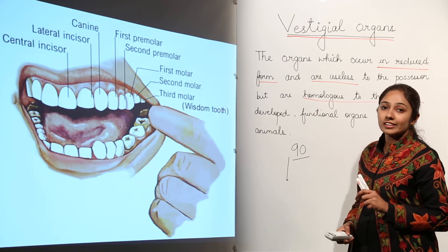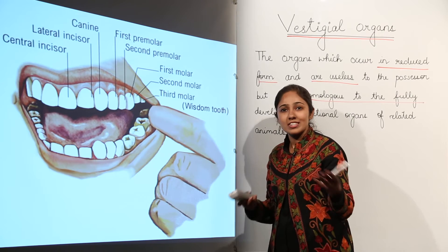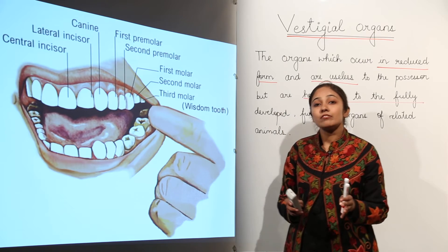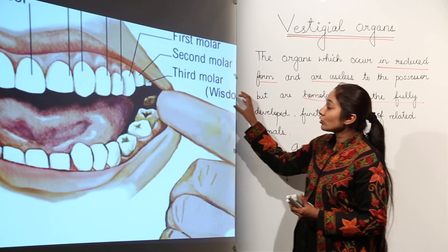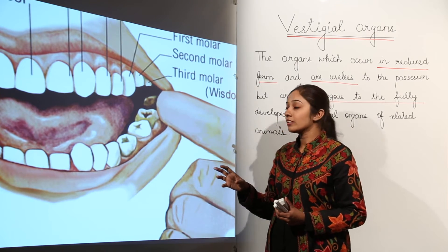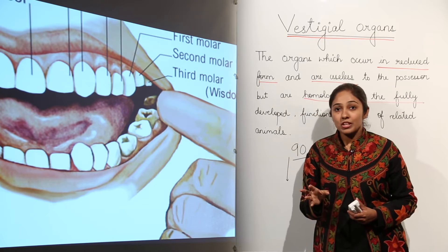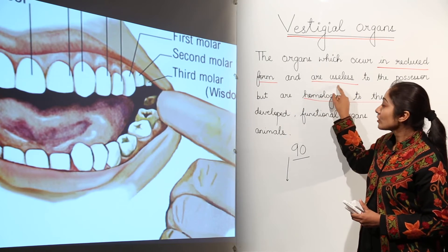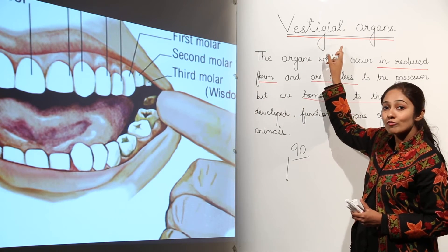The next example of a vestigial organ is the wisdom tooth. In 35% of individuals, the wisdom tooth never comes at all. In many individuals, the last tooth that appears at a later stage is the wisdom tooth, also known as the last molar. This wisdom tooth had some function in the past but now it is useless — that is why 35% of individuals have no wisdom tooth. It is an example of a vestigial organ.